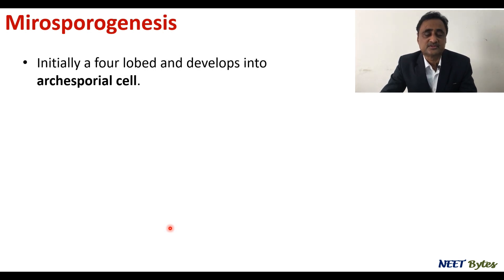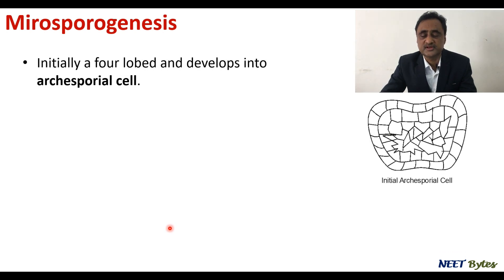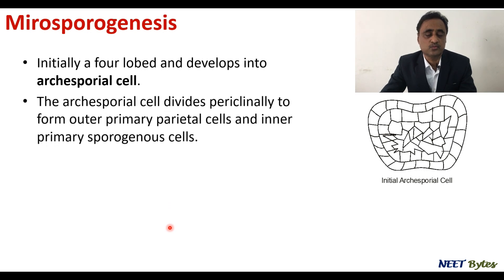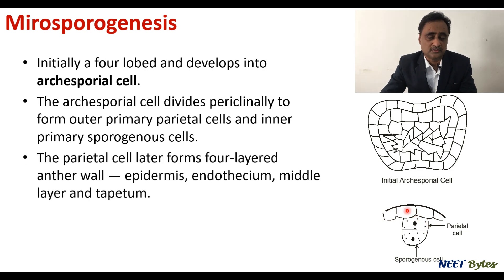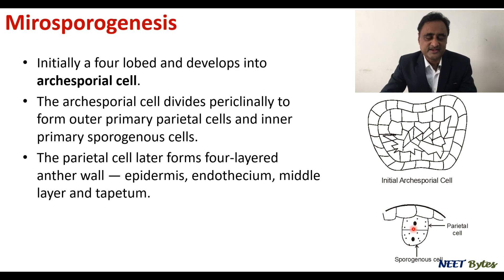Initially, in any anther there is an archesporial cell. This archesporial cell undergoes periclinal division. As a result, at the outer end there is formation of parietal cells, and at the inner end there are sporogenous cells. The parietal cells are responsible for formation of the anther wall, which is four-layered: epidermis, endothecium, middle layer, and tapetum.